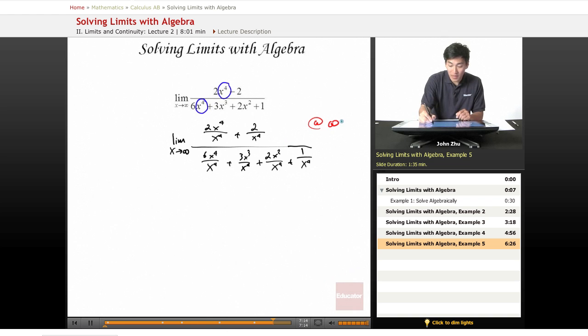So simplifying and looking at the behavior at infinity, we get that this reduces down to a 2, this is 0, this reduces down to a 6, this is 0, 0 as well, and last term is 0.